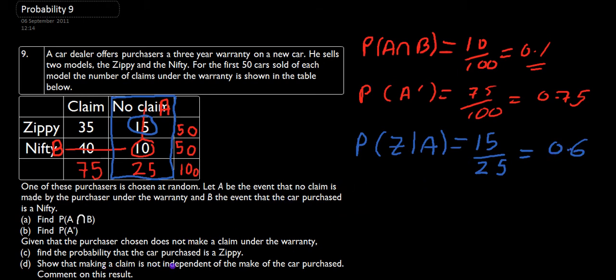Now, we want to show that making a claim is not independent of the make of car purchased. So making a claim is this column here. We know the probability of that happening is 0.75.